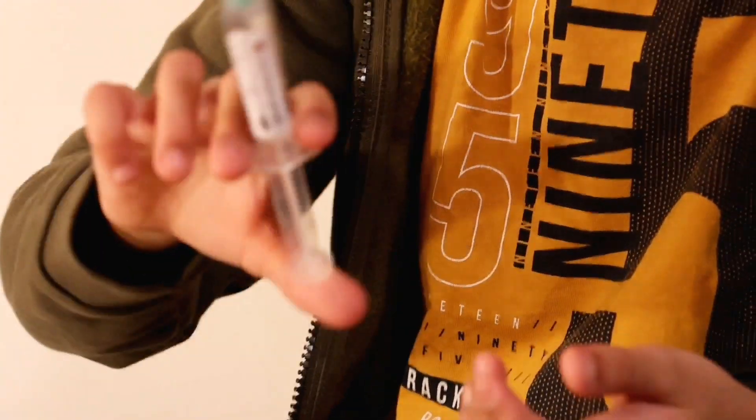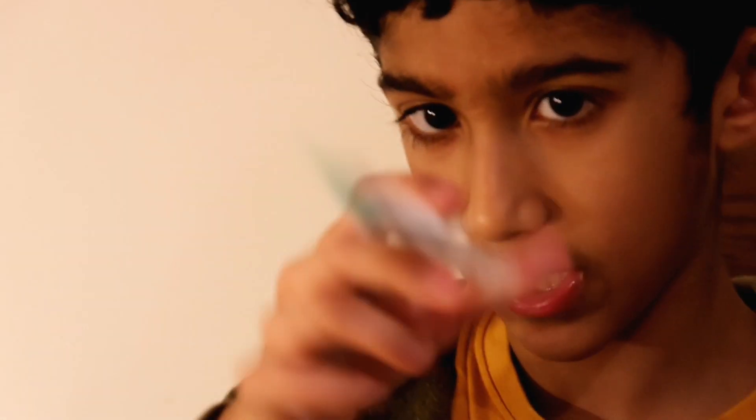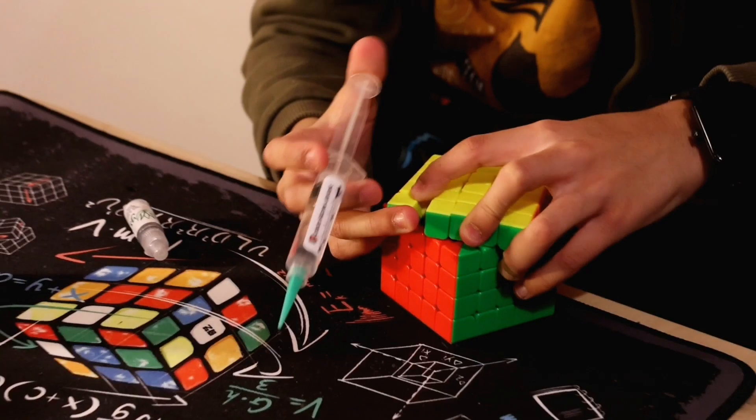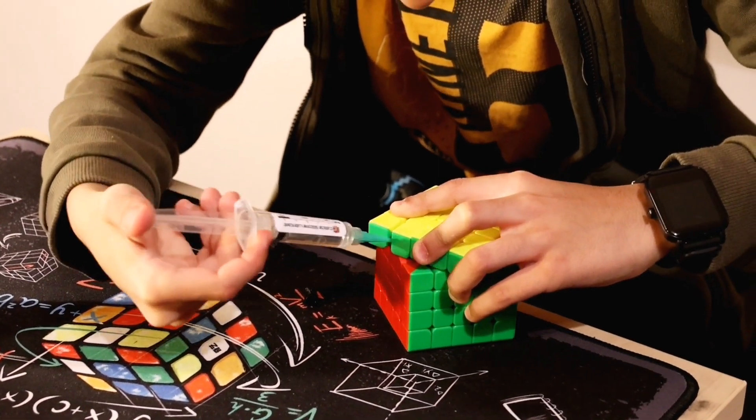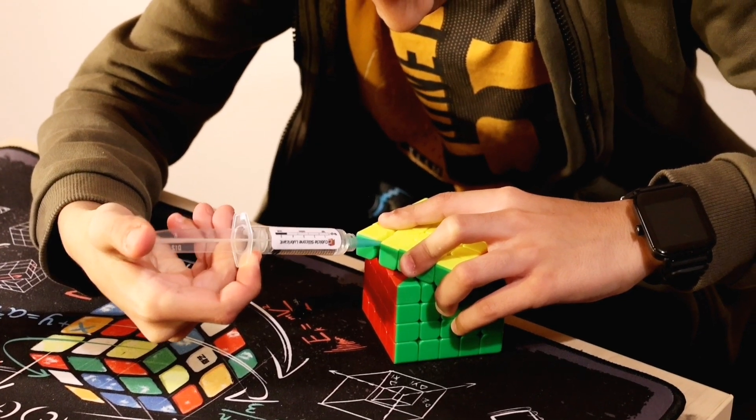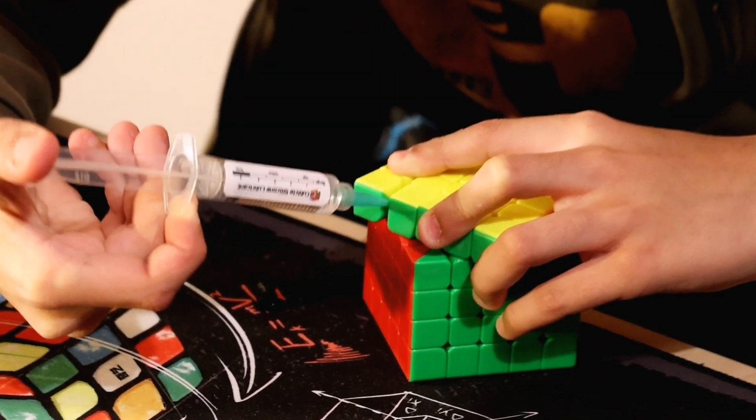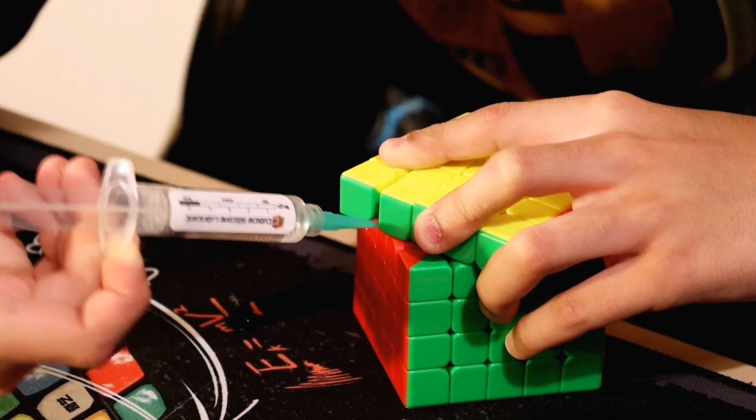And then what you want to do is put the syringe down, and then it can be used as a syringe. Put two fingers on the little tab bits, and then put your thumb on the end. And then, 45 degrees, open it up, and then you want to just syringe a little bit in there. It might take a bit of force, but you can actually see the lube comes out in little strips.